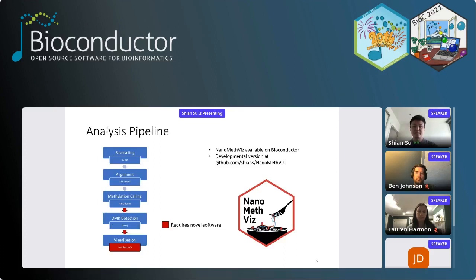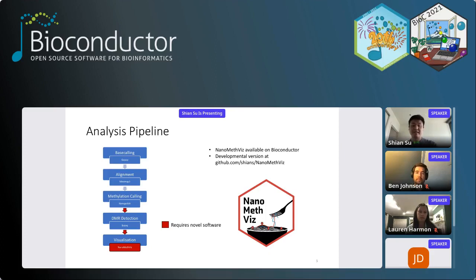The software I developed is now a Bioconductor package, and there are some new features in this presentation only available in the developmental version on my GitHub. In general, the pipeline people use to analyze methylation involves base calling — converting the raw signal into bases using Guppy, the ONT software — then alignment, methylation calling, and ideally DMR (differentially methylated region) detection and visualization. The red arrows indicate gaps where the output of one software doesn't feed nicely into the next, and at the end there wasn't a good package for nanopore-specific visualization. That's what NanoMethVis does.